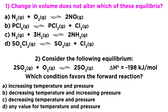Looking at the first one — a change in volume. Notice that all of these equilibria have gaseous substances. If we change the volume, it is going to have an impact on which side is favored. If we increase the volume, the pressure will drop, and the equilibrium will move towards the side with more gaseous particles, so as to reclaim some of the lost pressure. If we reduce the volume, that will increase the pressure, and the equilibrium will shift to the side with fewer gaseous particles, so as to relieve some of that additional pressure.